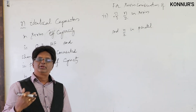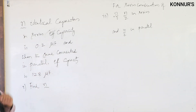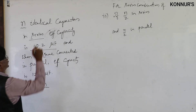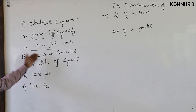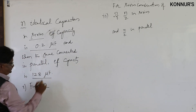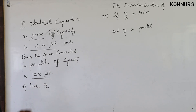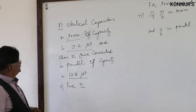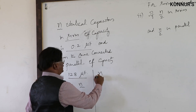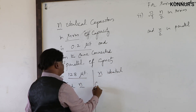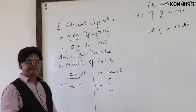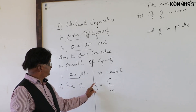Example 4: n identical capacitors all in series give effective capacity 0.2 microfarad; all in parallel give 128 microfarad. Find n. Recall: for n identical capacitors of capacity C each, C_series = C/n and C_parallel = n×C.